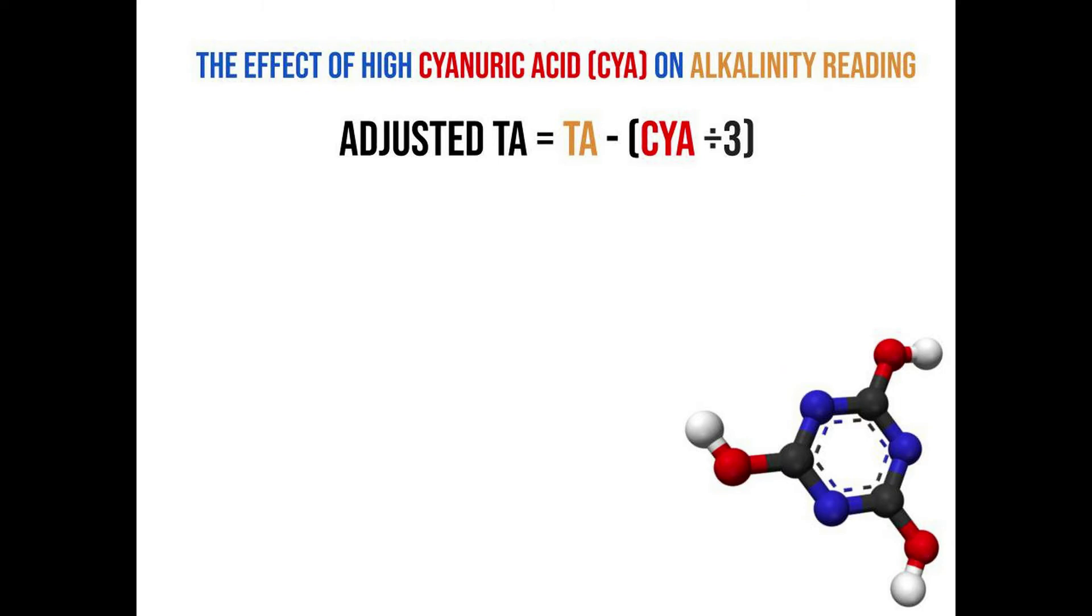So let's go ahead and do a quick example below. So say you test on your test kit a total alkalinity of 90. And you go, oh, that looks great. And then you test a cyanuric acid level of 90.